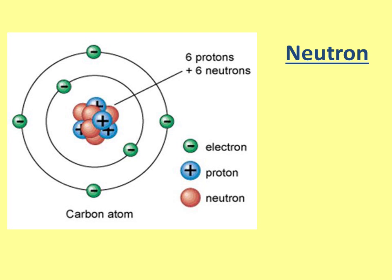The other next thing is the neutron. Inside this picture, it's the red circles. They've got a charge of zero—they are neutral. They've got a mass of one, so they have the same mass as a proton, but they do have a different charge.